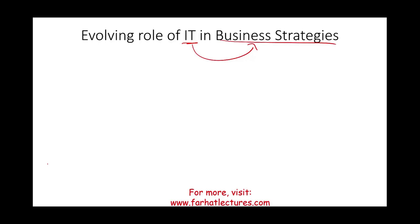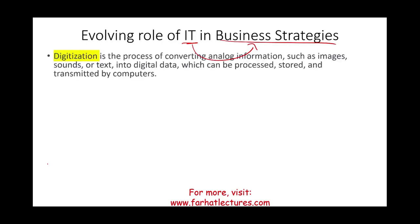The process over the years has been evolving rapidly. The process is called digitization — it's the process of converting analog information, such as images, sounds, text, and anything else, into digital data that can be processed, stored, and transmitted by computers. And as a result, you will need IT, and once it's on the computer, it's basically on the internet.